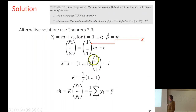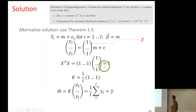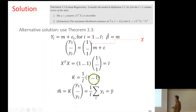We compute X-transpose X: this is a sum of ones as many times as there are data points, so capital I — just the number of data points. The projection matrix K equals the inverse of this matrix, which is just a number 1 over I, times X-transpose, a row vector of ones. Applying K to the data vector Y gives the sum of all Y divided by I, which is y-bar. The theory gives us the same answer as before.